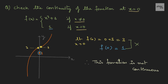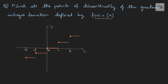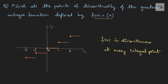Let's move to the next question: find all points of discontinuity of the greatest integer function defined by f(x) = ⌊x⌋. We need to find where exactly this function is discontinuous. Drawing the diagram, from the graph we can see that the function is discontinuous at every integer. Therefore, f(x) is discontinuous at every integral point.